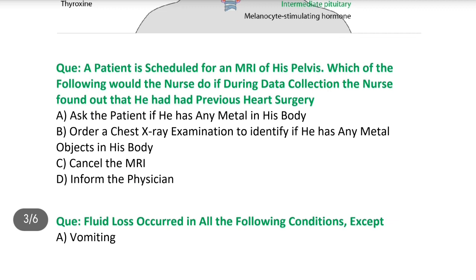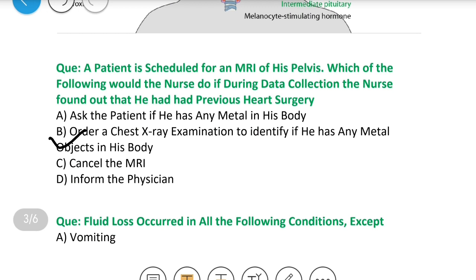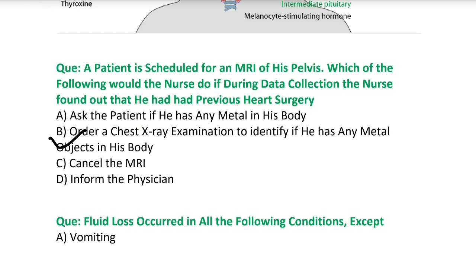Next question: A patient is scheduled for an MRI of his pelvis. During data collection the nurse found out that he had a previous heart surgery. Options: A) ask the patient if he has any metal in his body, B) order a chest X-ray examination to identify if he has any metal object in his body, C) cancel the MRI, D) inform the physician. Answer is B — order a chest X-ray examination. MRI की case में शरीर के अंदर कोई भी metal implant नहीं होना चाहिए, क्योंकि MRI के अंदर magnet सब metals को अपनी तरफ खींचती है और patient की जान पर आ सकती है.